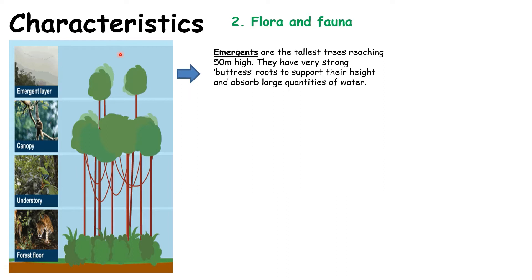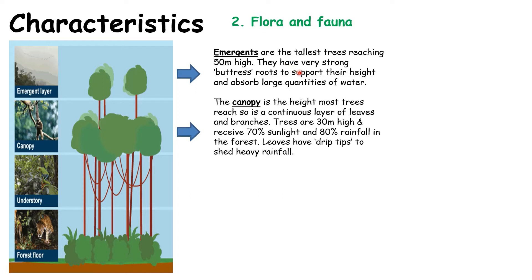The first layer is really high up. The very tallest trees are called emergents, up to 50 metres high. To be this tall, the trees have massive roots stretching out from the base, called buttress roots. The next layer within the rainforest is the canopy — the main layer of branches and leaves. Because it is so dense, 70% of the sunlight hits this layer.